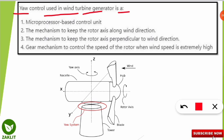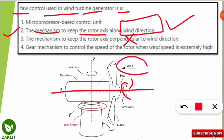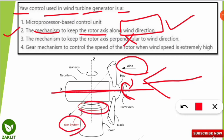The correct option is option number two. The yaw control used in a wind turbine generator is a mechanism to keep the rotor axis of the turbine along the wind direction — not perpendicular to it, but along it. As seen in the picture, the rotor axis must face the direction from which the wind is coming. This alignment system is called the yaw system.